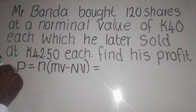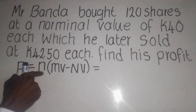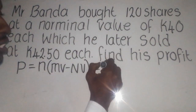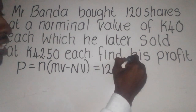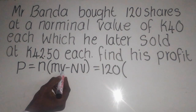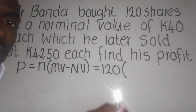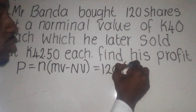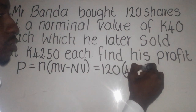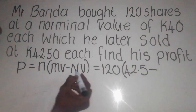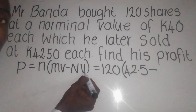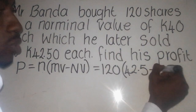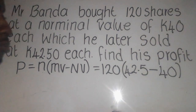So this formula is for profit. N simply means number of shares — we are given 120, so we put 120 there. MV stands for market value, the price at which you sell the product at the market, which is 42.5. NV is the nominal value, the price at which the company declared the shares, which is 40 quarter. So we say 42.5 minus 40 quarter.